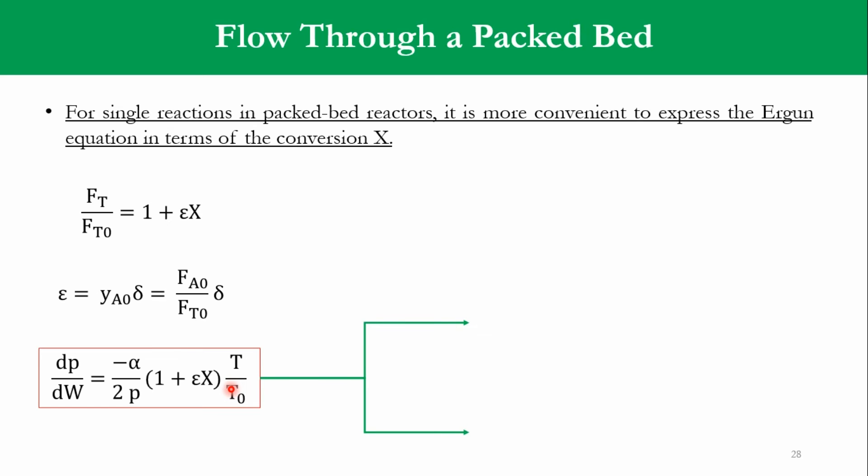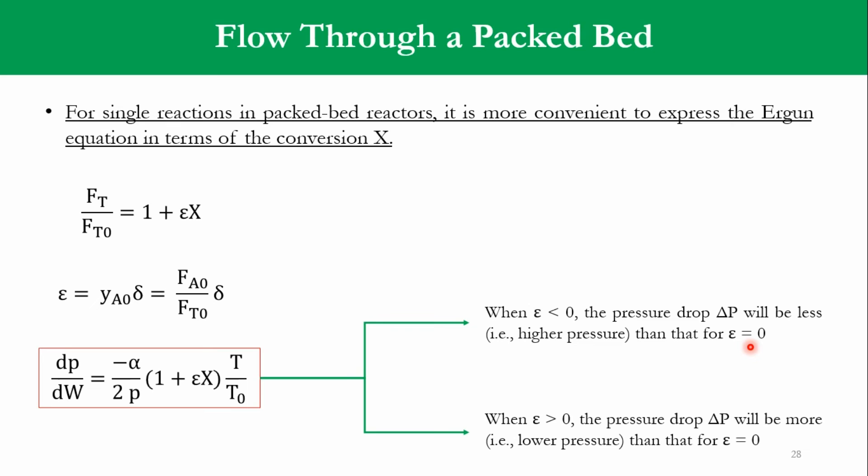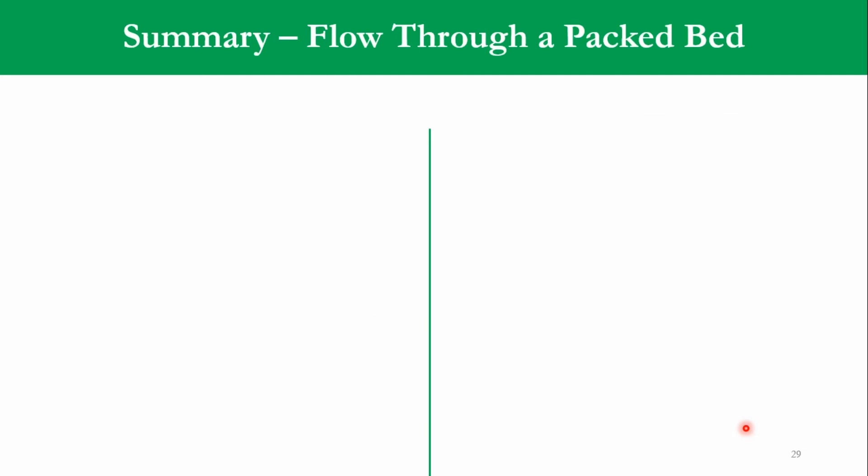So, accordingly, that dP over dW is equal to minus α over 2P, and that expression FT over FT0 is replaced by 1 plus εx times T over T0. Now, there are two concepts which we have to grasp. Number one is when ε is less than 0, the pressure drop will be less than that for ε equal to 0. And when ε is greater than 0, the pressure drop will obviously be higher than that for ε equal to 0. When there is more pressure drop, accordingly the system pressure will be less.